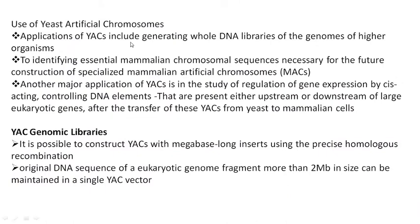The uses of YAC include generating whole DNA libraries of the genome of higher organisms, which is very useful for genome sequencing. It is also useful to identify essential mammalian chromosomal sequences necessary for the future construction of specialized mammalian artificial chromosomes. With the help of yeast, you can construct mammalian artificial chromosomes. Another major application of YAC is in the study of regulation of gene expression by cis-acting controlling DNA elements present either upstream or downstream of large eukaryotic genes, after transfer of these YACs from yeast to mammalian cells.